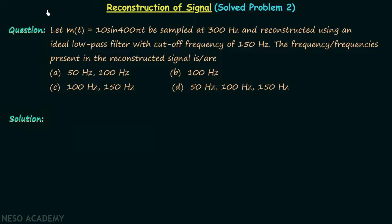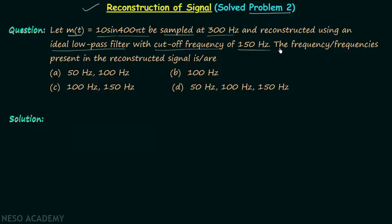In the last lecture we obtained the frequency components of a sampled signal. In this lecture we will solve problem number 2 based on reconstruction of a signal. The message signal m(t) is equal to 10 sin(400πt), sampled at 300 Hz. The message signal is reconstructed using an ideal low pass filter with cutoff frequency equal to 150 Hz. We need to find all frequencies present in the reconstructed signal.